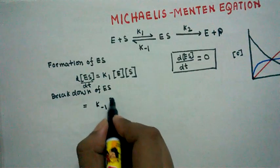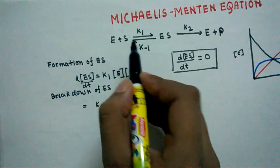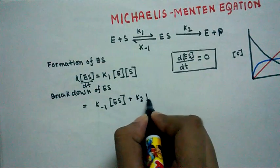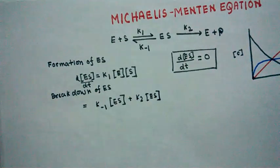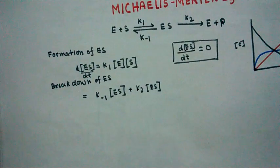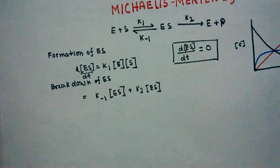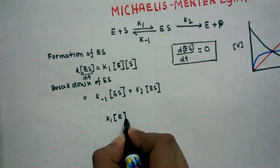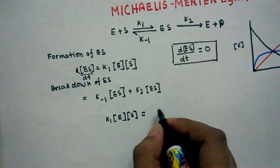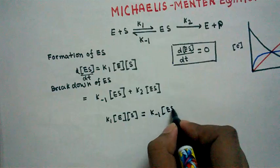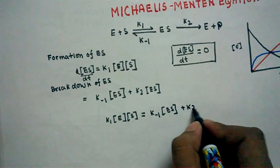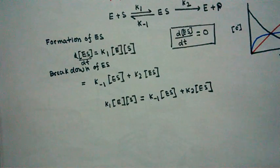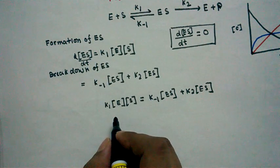The rate of breakdown of the enzyme-substrate complex has two terms: k-minus-1 times [ES], accounting for the reverse reaction, plus k2 times [ES], accounting for breakdown to give product and enzyme. By our steady-state assumption, rate of formation equals rate of breakdown, so we equate these two expressions.